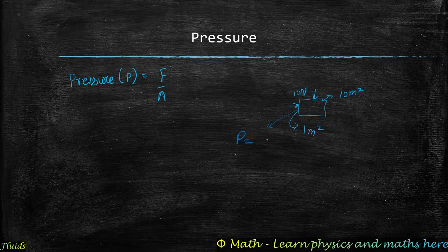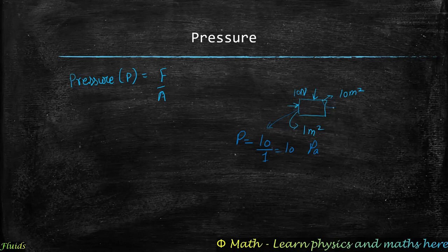The pressure in the first case would be force over area — 10 over 1 — which equals 10 Pascal. Pascal is the unit of pressure. On the other side, the pressure would be 10 over 10, or 1 Pascal.